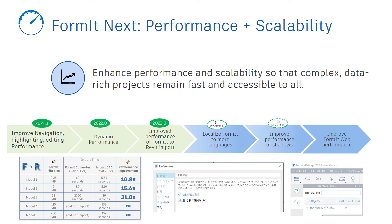We continue to prioritize performance and scalability. In the past release that went out in October of 2020, we significantly improved model performance for navigation, selection, and editing, making some of those actions up to 20 and even 30 times faster. In Formit 2022, we significantly sped up the time it takes to import a Formit model into Revit, while also improving quality and reliability. We also improved the performance of re-running Dynamo graphs from within Formit.